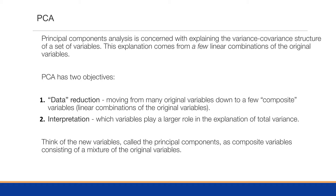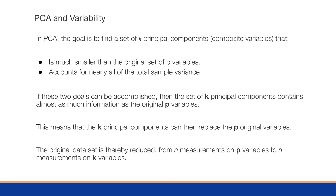The second objective is interpretation. When we group variables together into a particular dimension and understand the weight associated with those variables, it gives us a way to interpret that grouping, playing a larger role in explanation of total variance. Think of the new variables — the principal components — as composite variables consisting of a mixture of the original variables. In PCA the ultimate goal is to find K principal component functions, each with coefficients against each variable, where K is much smaller than the original set of P variables.